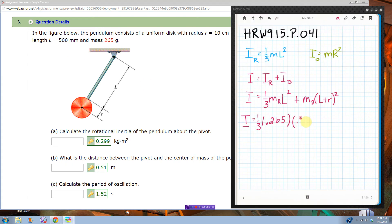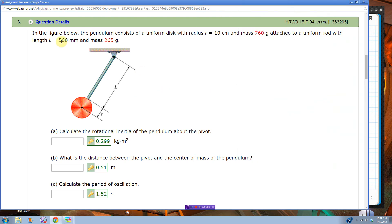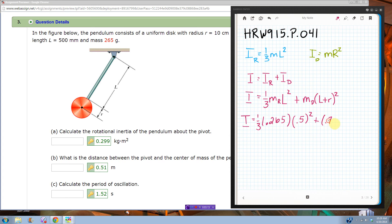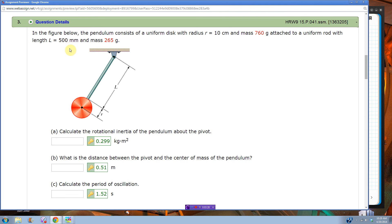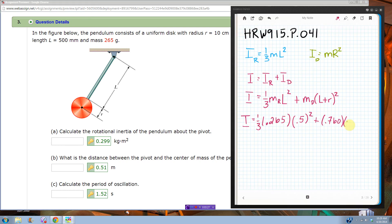Okay, so this would be 0.5 meters squared plus mass of the disc, let's see, 760 grams, that's 0.760 kilograms, then L, L is again 0.5, and r is 10 centimeters, that's 0.1. So together, that would be 0.6, I'm going to put 0.5 plus 0.1, just to be very, very clear, and squared.